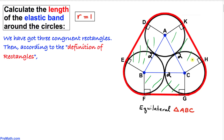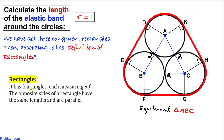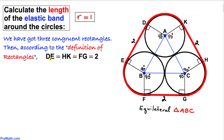A rectangle has four angles each measuring 90 degrees, and opposite sides have equal lengths. Since the side of the equilateral triangle is two, the opposite side of each rectangle is also two. Therefore line segments DE, HK, and FG are each equal in length to two units.